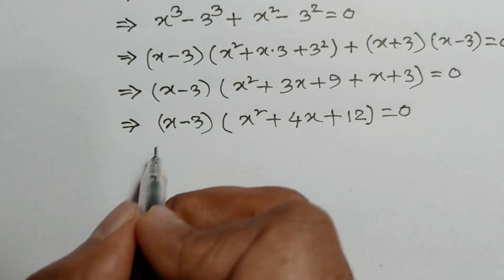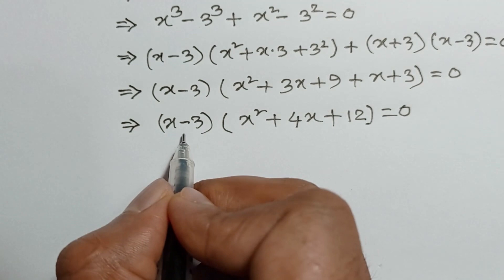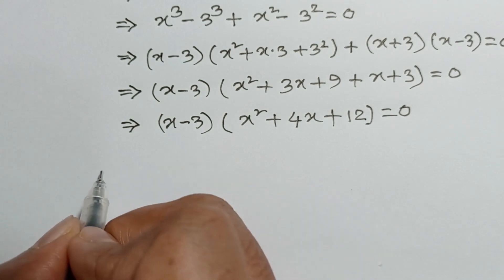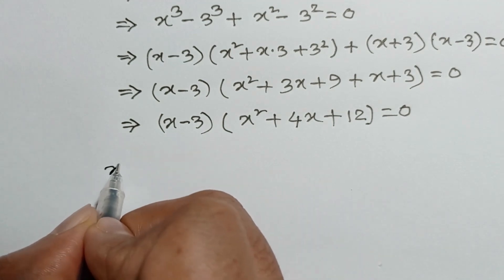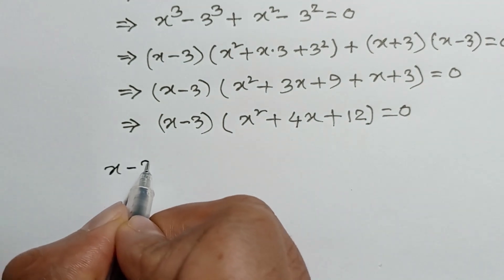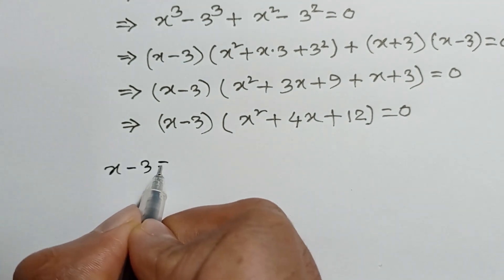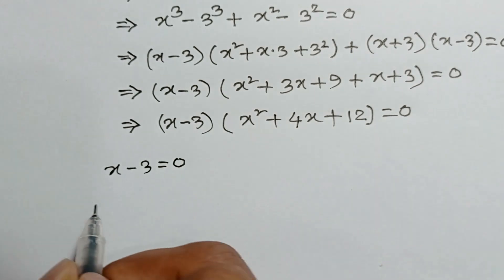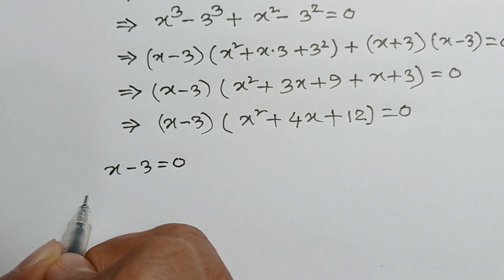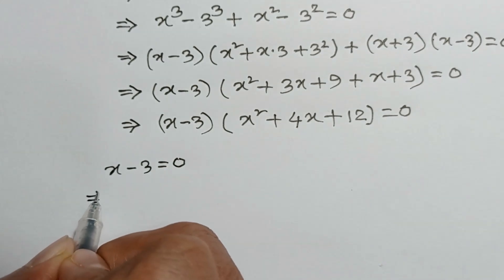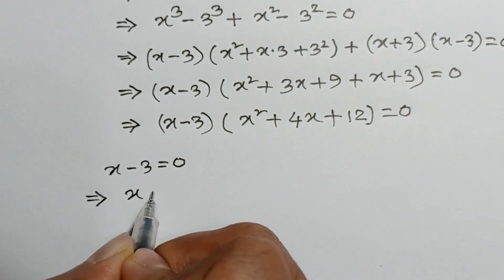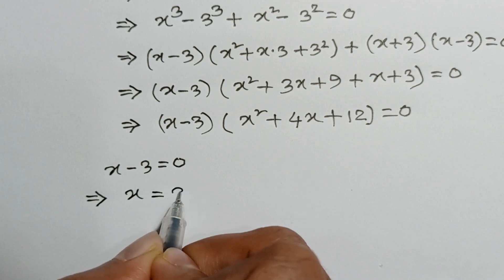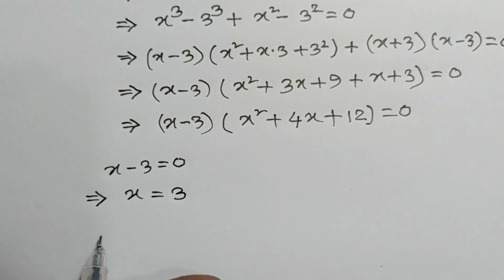So we can write x minus 3 equals 0, which gives x equals 3.